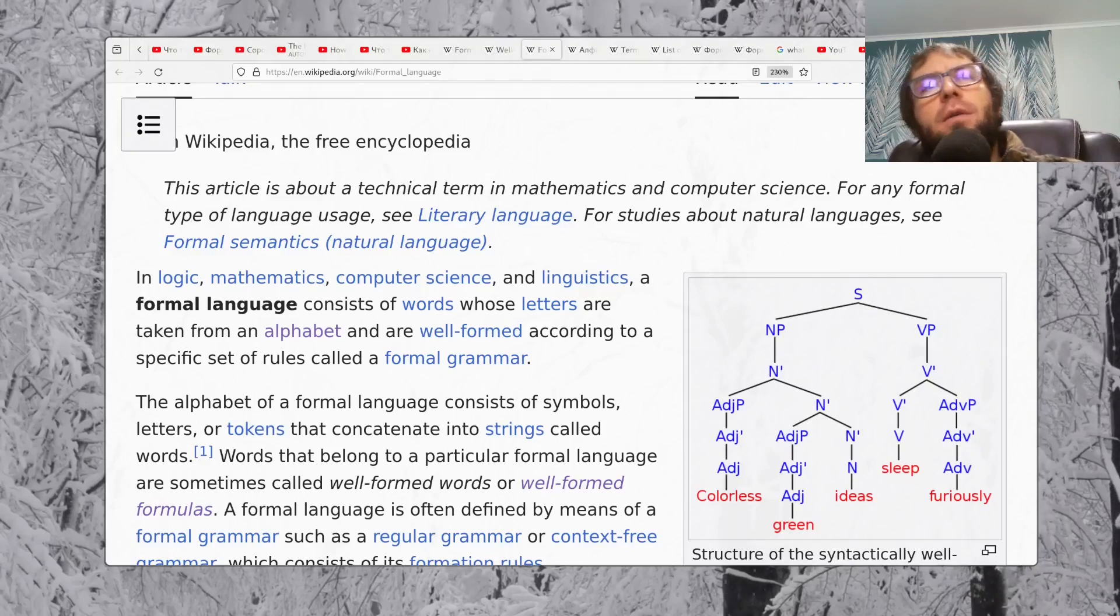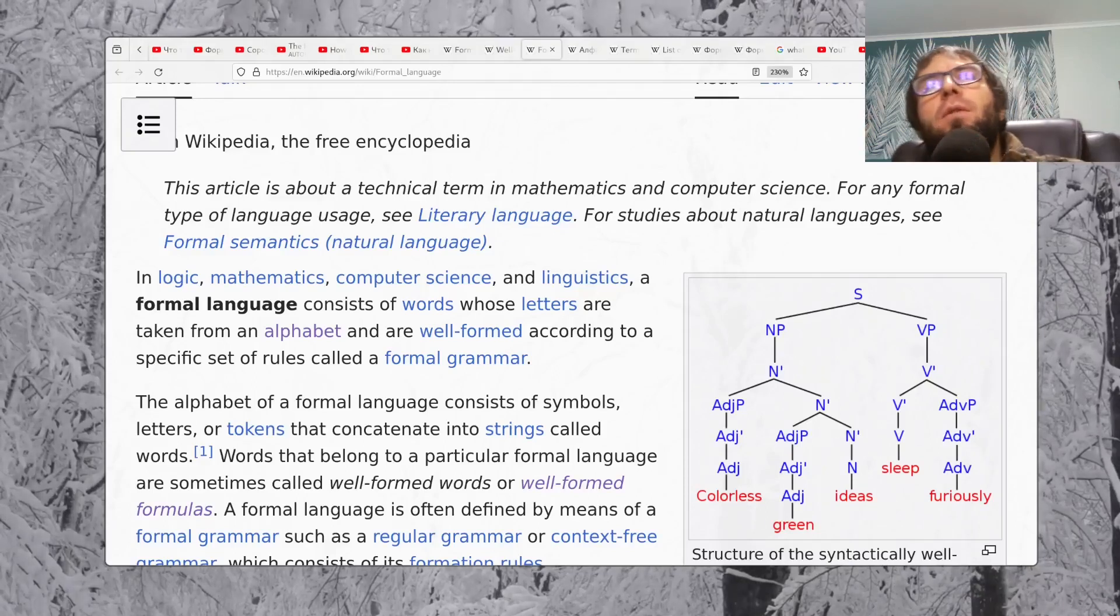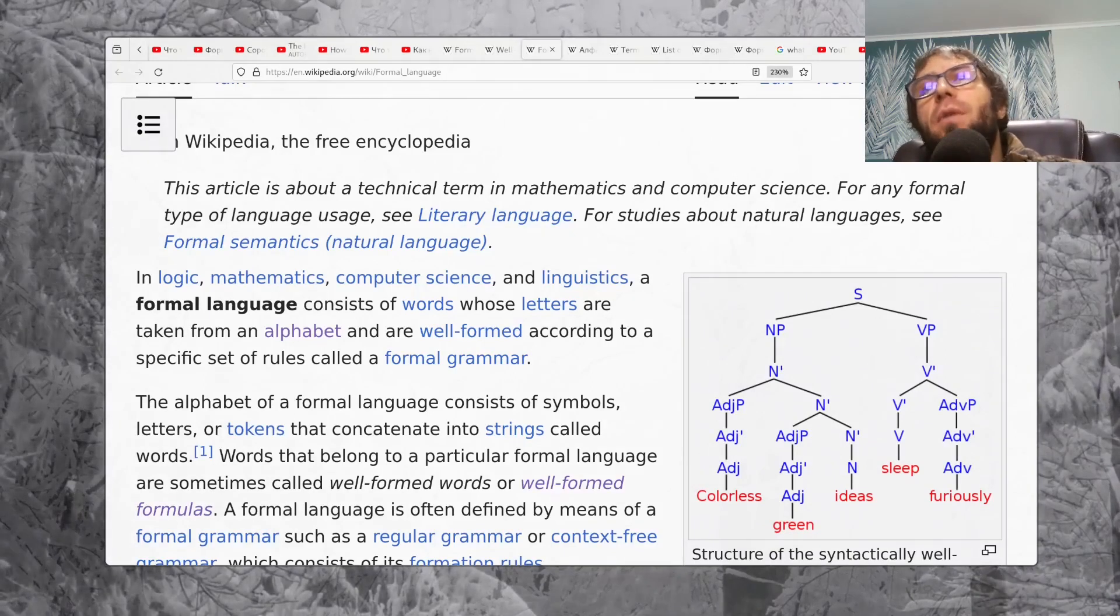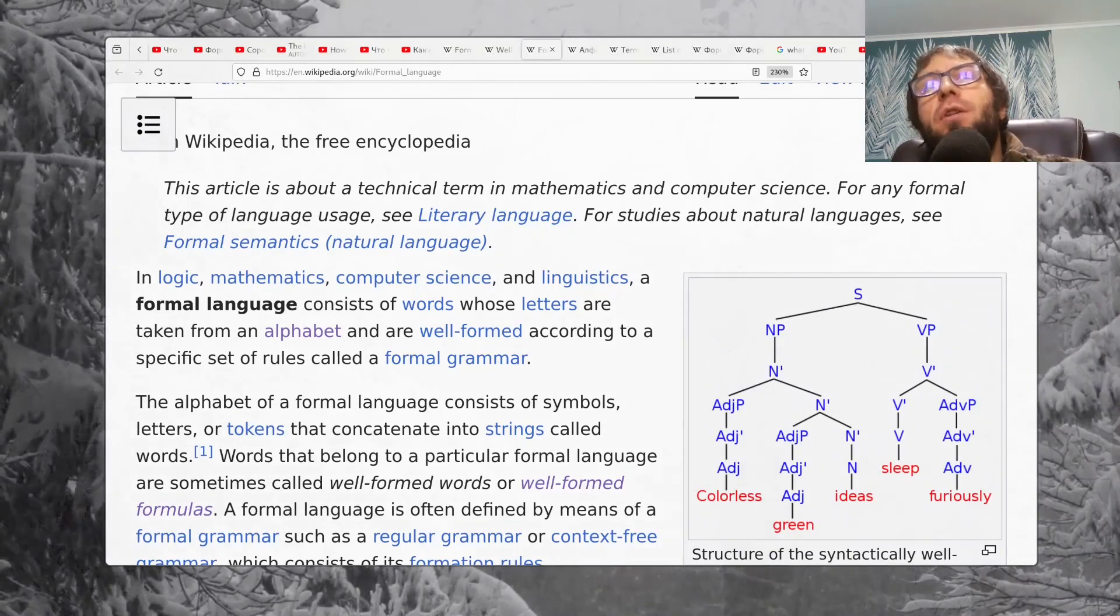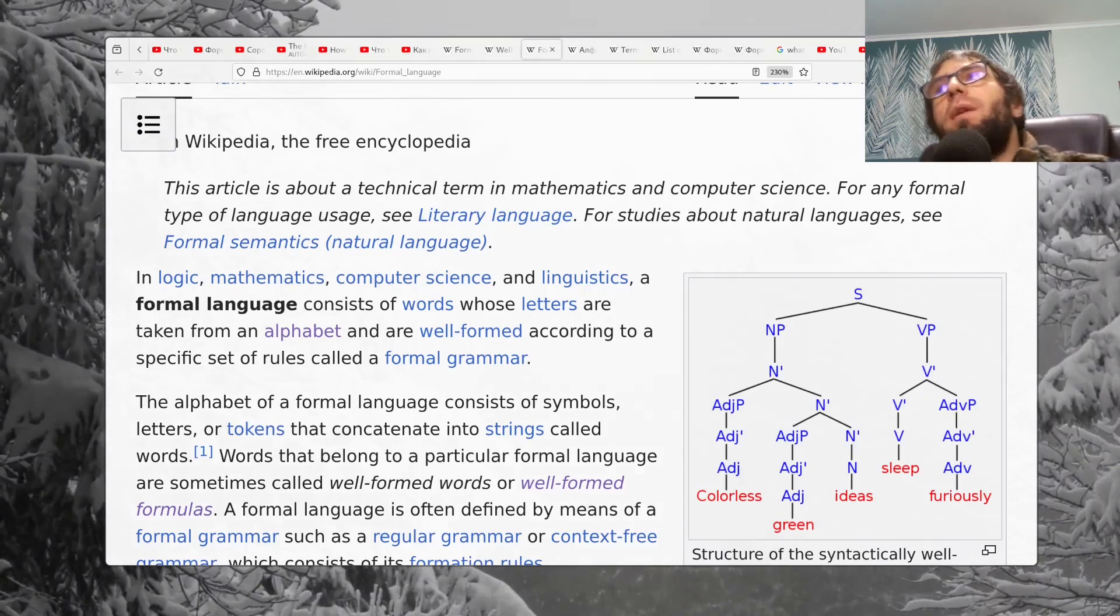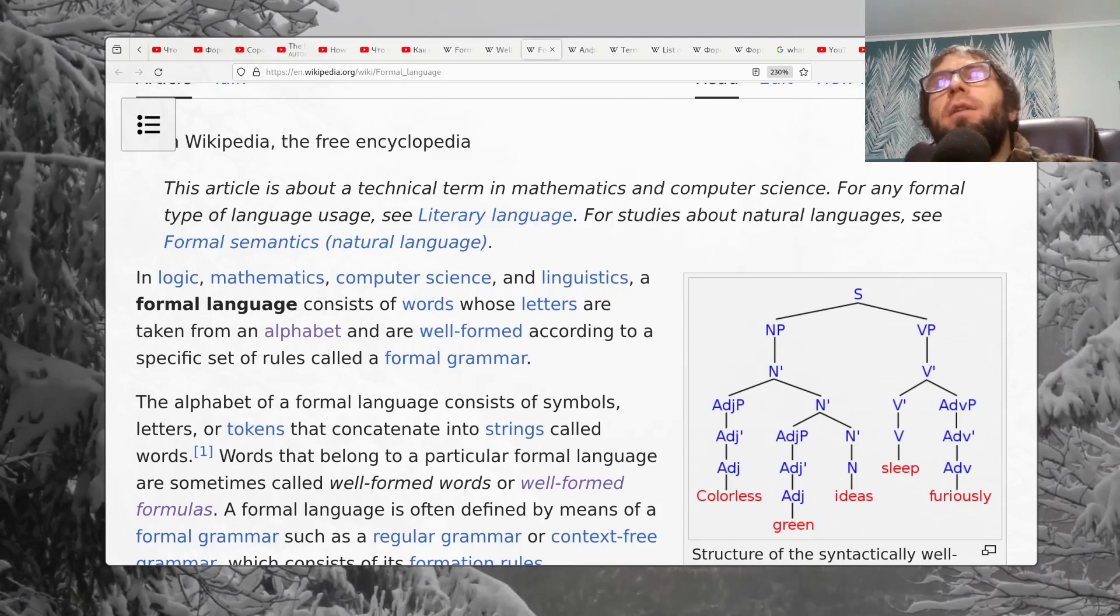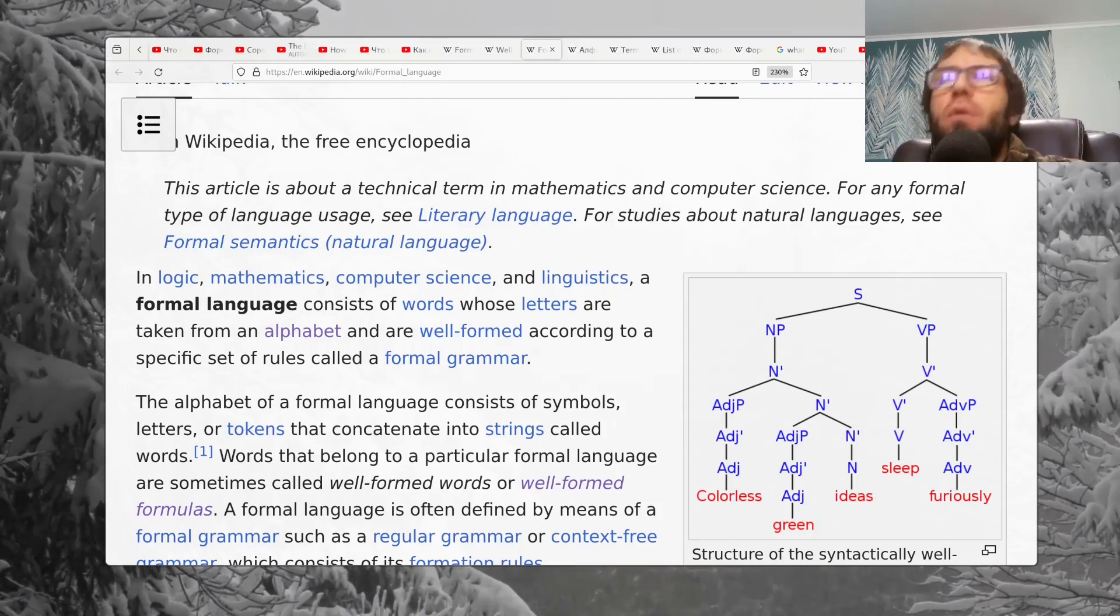And that's why it is easier to provide some set of rules or algorithm which can generate from these characters all possible words of the concrete language. And this thing is called formal grammar.